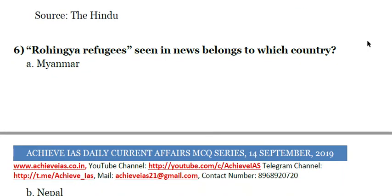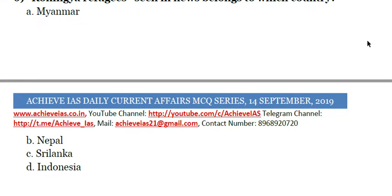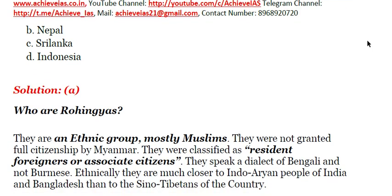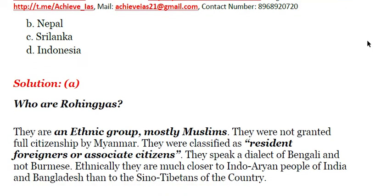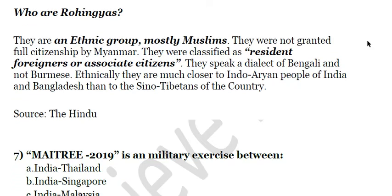The sixth question: Rohingya refugees seen in news belong to which country? The options are Myanmar, Nepal, Sri Lanka, and Indonesia. The answer is A, that is Myanmar. Rohingyas are basically an ethnic group, mostly Muslim, who are residents of the Rakhine state of Myanmar. Ethnically they are much closer to the people of India and Bangladesh.